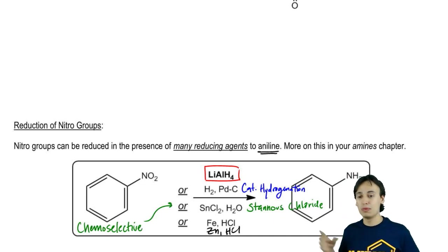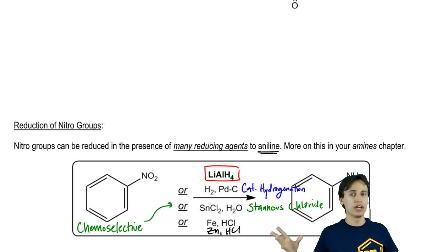My personal favorite is the tin chloride, the stannous chloride. That's the one I'll use the most often in this course because it's chemoselective specifically for the nitro group, so it has very high yields of aniline when we use it. Let's move on to the next topic.